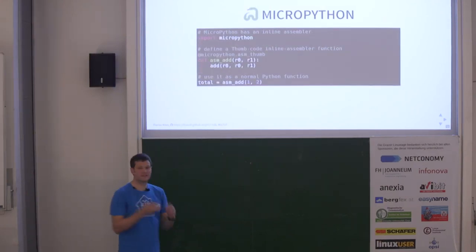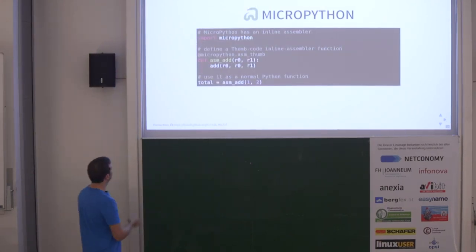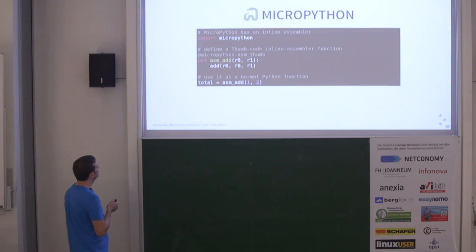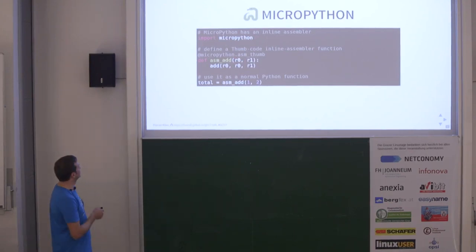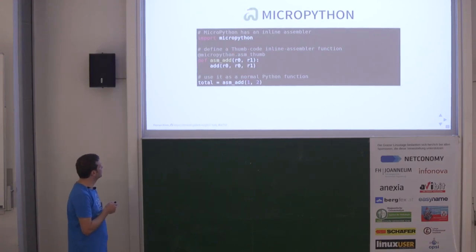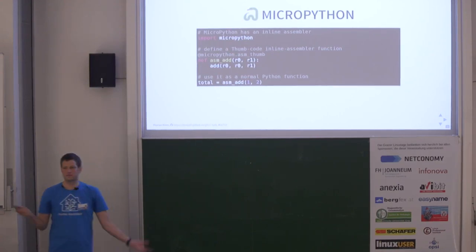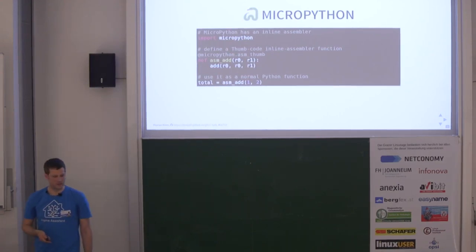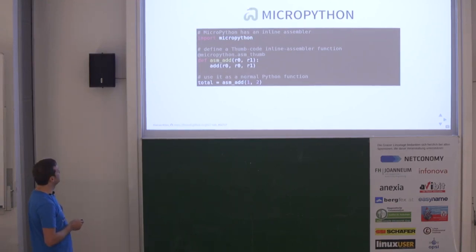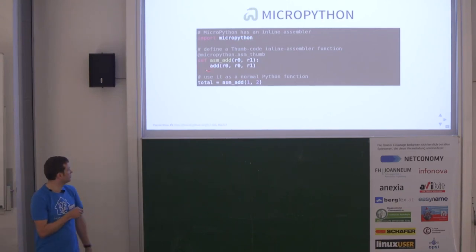If that's still not enough, you can even directly code assembler in Python. You decorate a function to be assembler code, use the basic methods your assembler provides, call the assembler function, and the assembler code runs inside that decorated function.